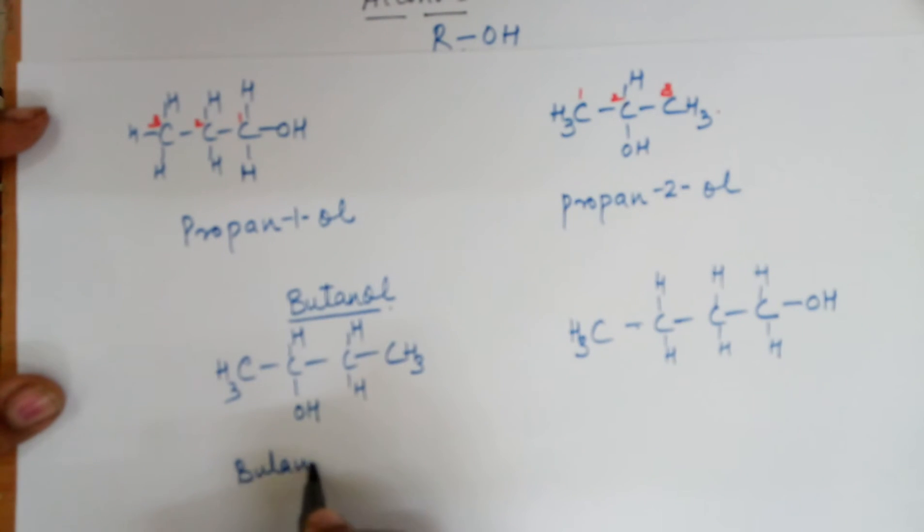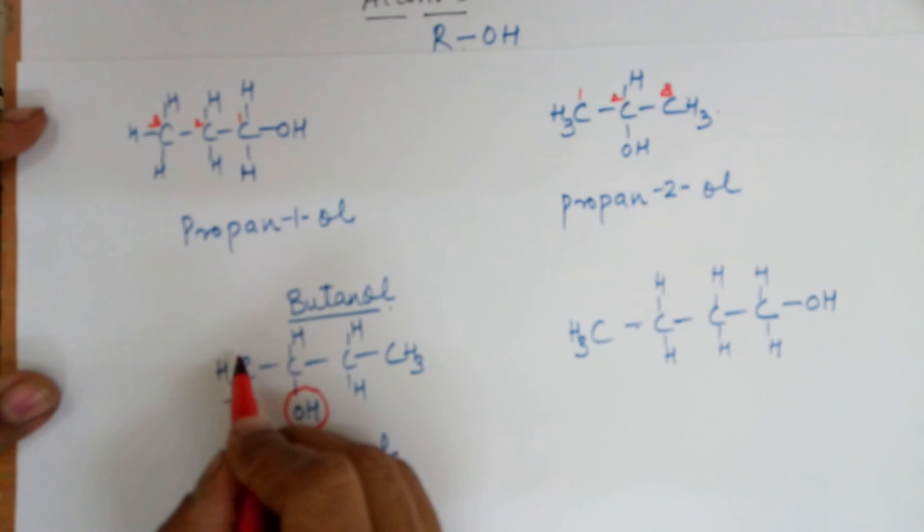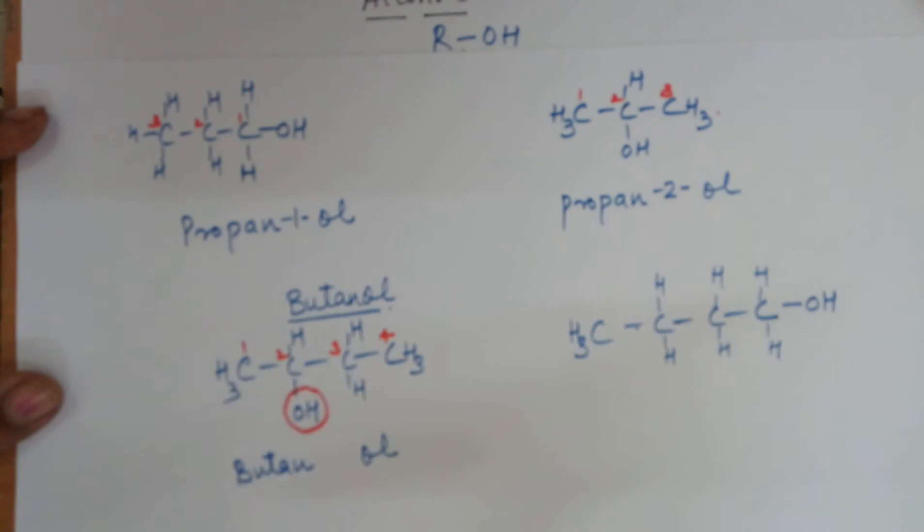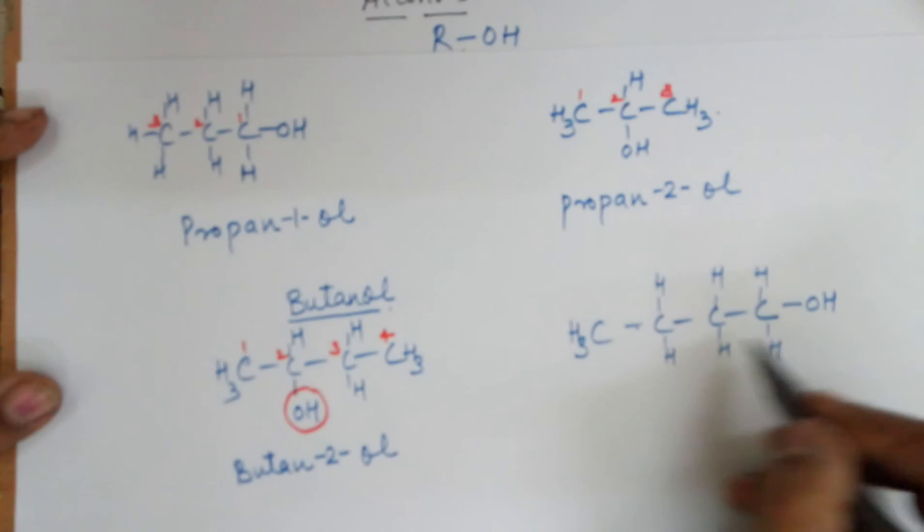Hence the name would be butane, remove the E, you need to add 'ol', and you need to mention the position of the OH group. As you can see, I can number it from this side one, two, three, and four. My OH gets the second number. But if I number it from this end one, two, three, now it gets the third number. So in this case, the right way of numbering would only be from the left side: one, two, three, and four. So the name of this compound becomes butan-2-ol, and there's no other option.